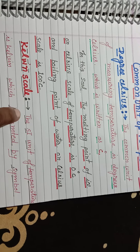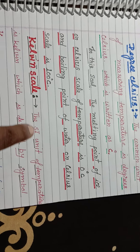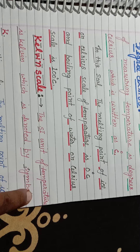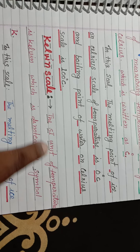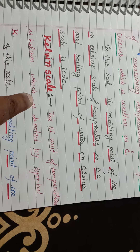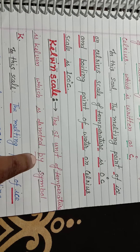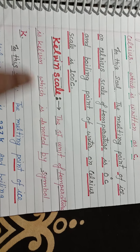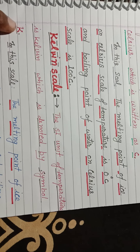The other unit of measuring temperature is the Kelvin scale, which is denoted by the symbol K.